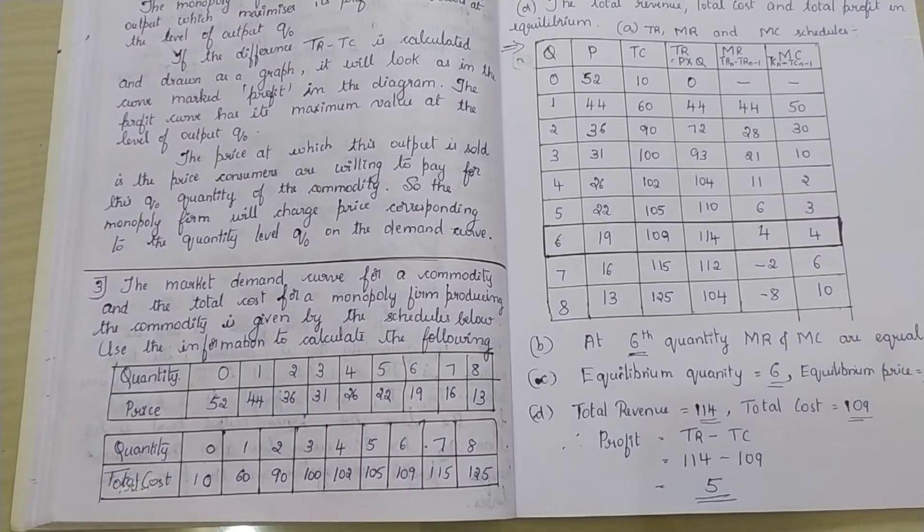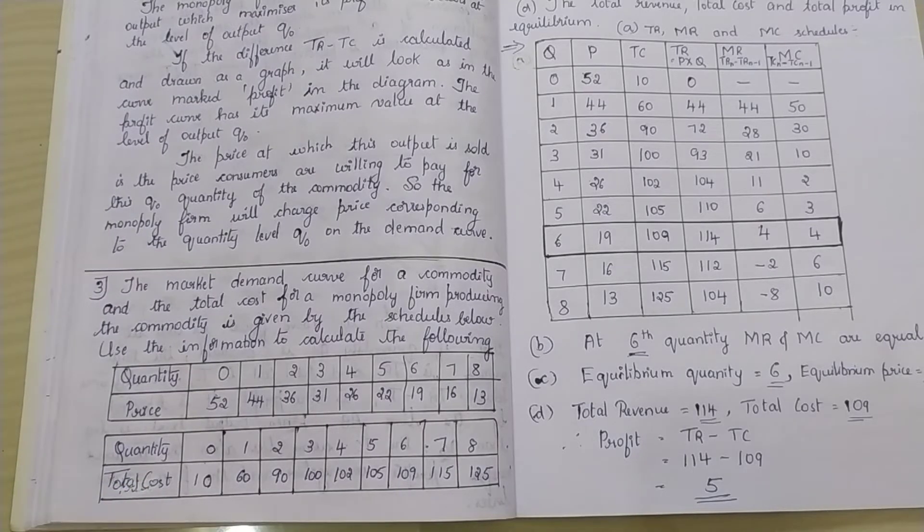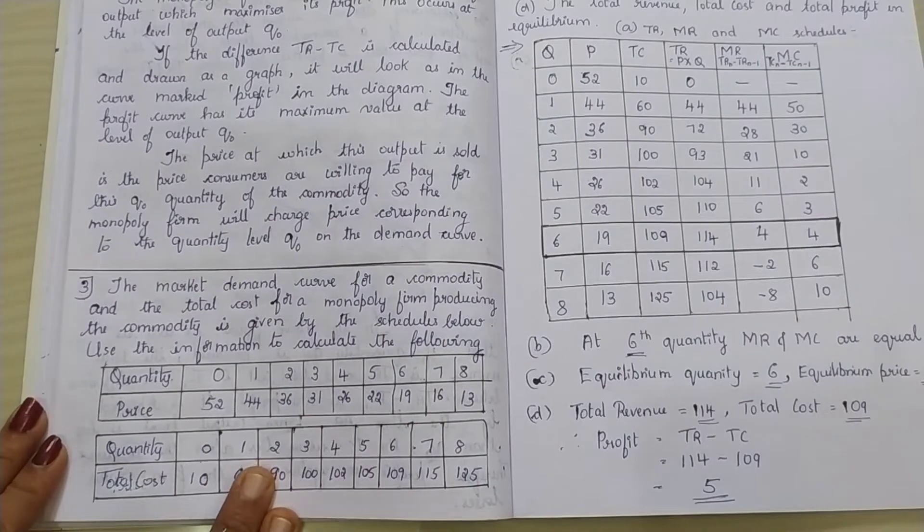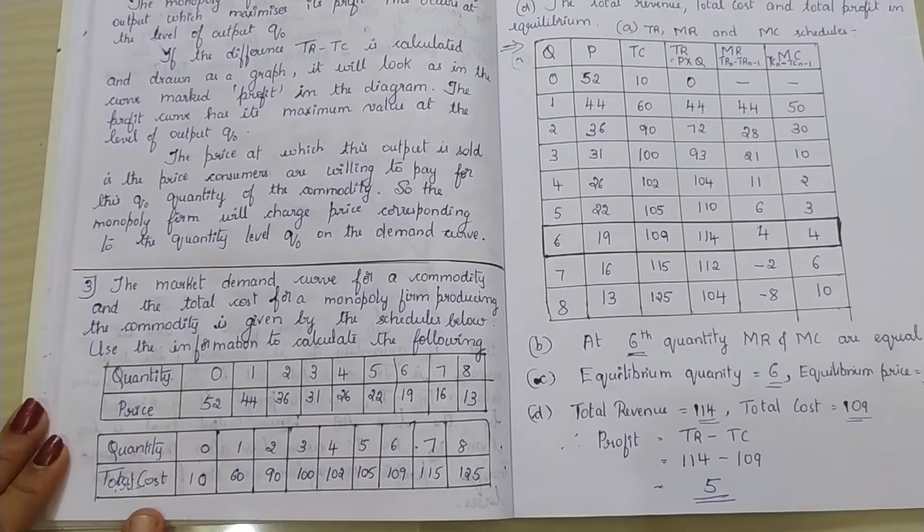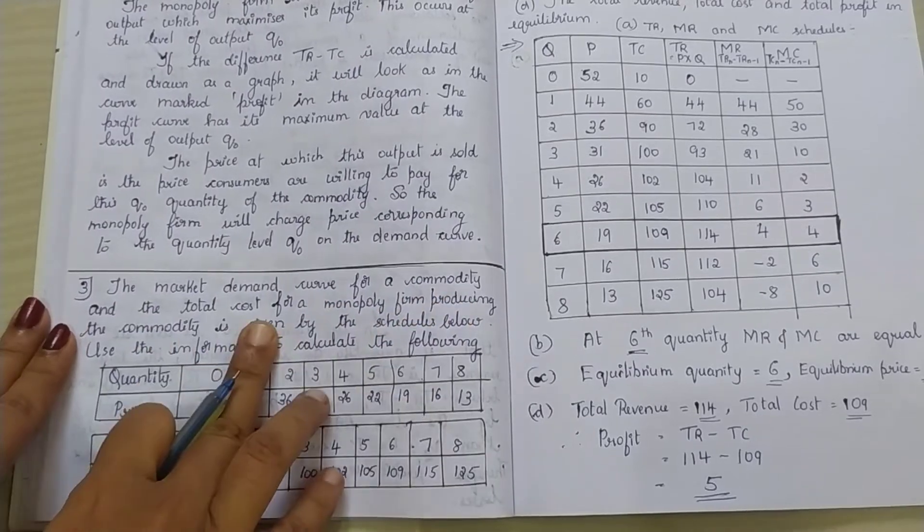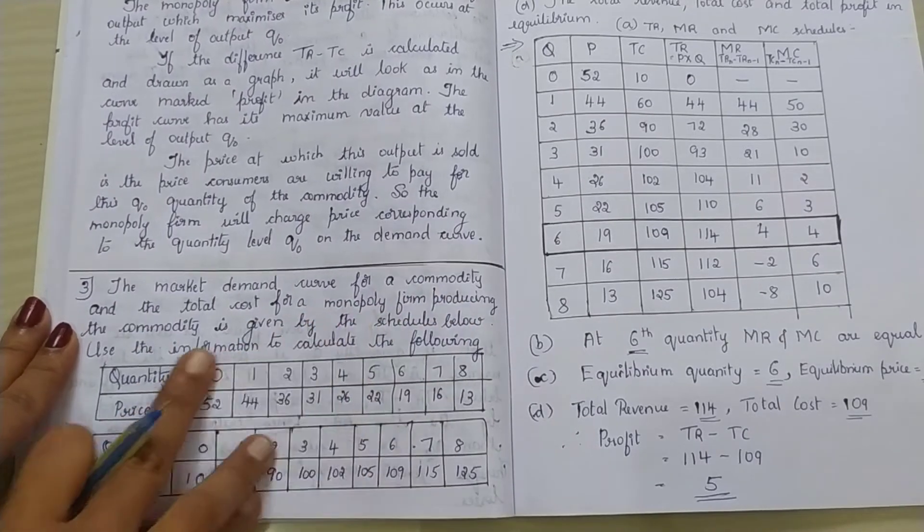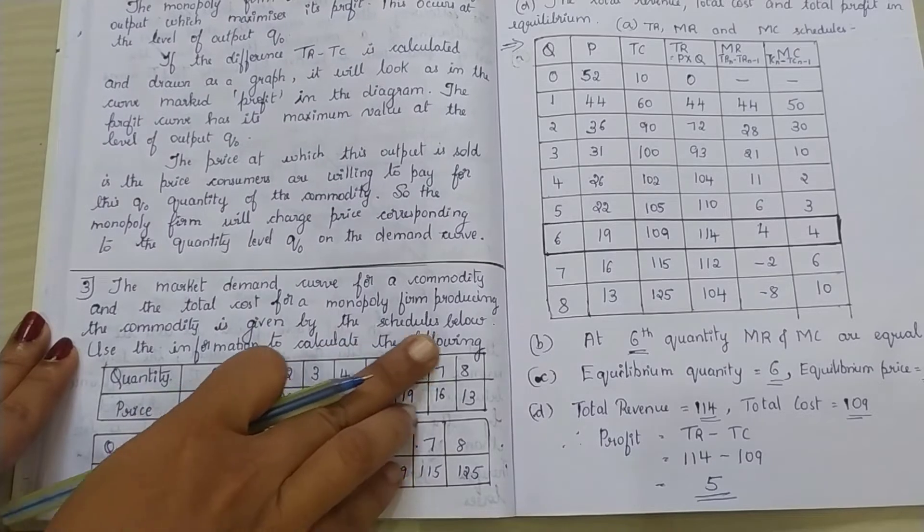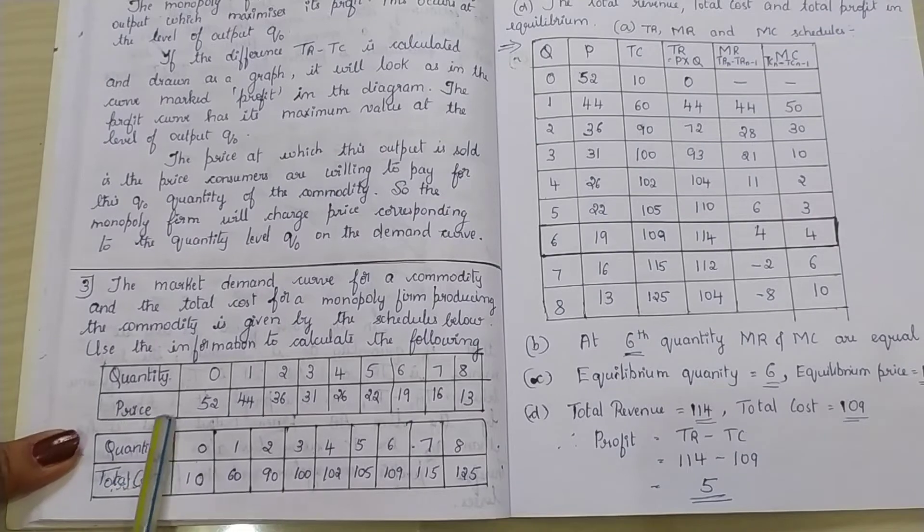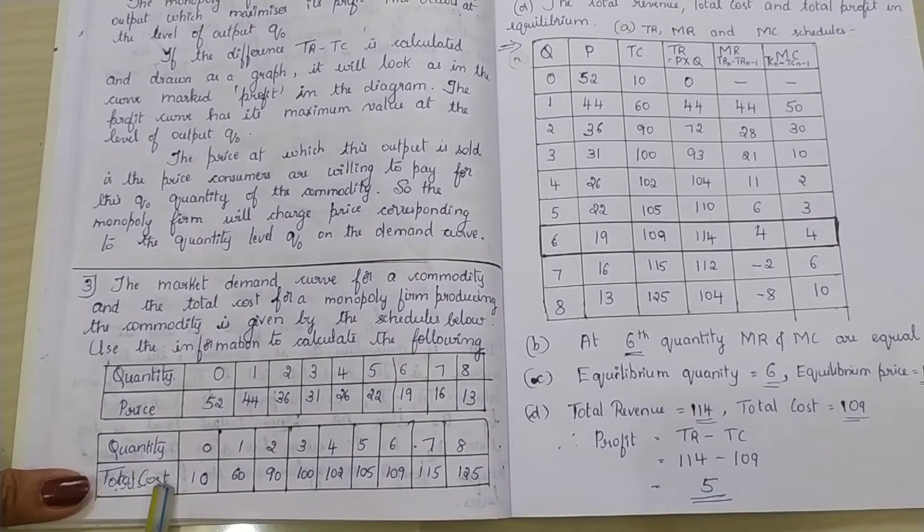Hello everyone, welcome back to CMAS Academy. In this video, we are going to solve one 6 marks question from microeconomics last chapter, that is non-competitive markets. This is a practical problem. The question is: the market demand curve for a commodity and the total cost for a monopoly firm producing the commodity is given by the schedules below. Use the information to calculate the following. So, quantity, price, total cost and total cost.